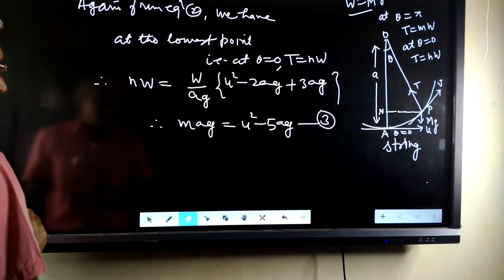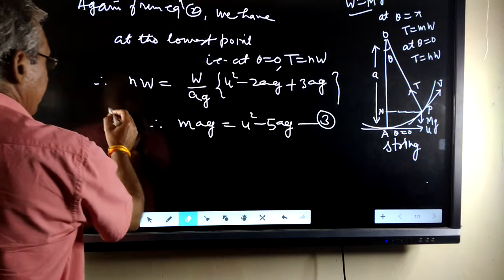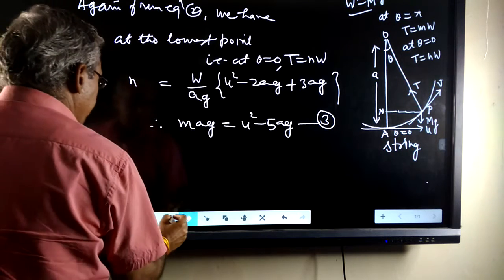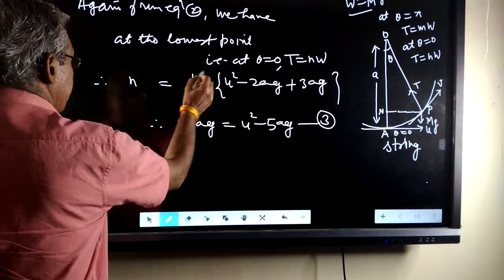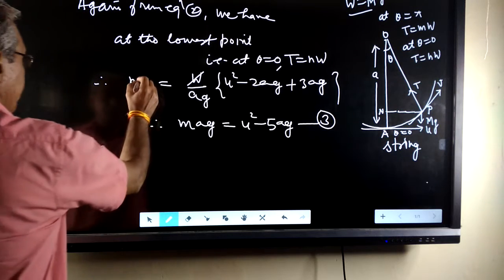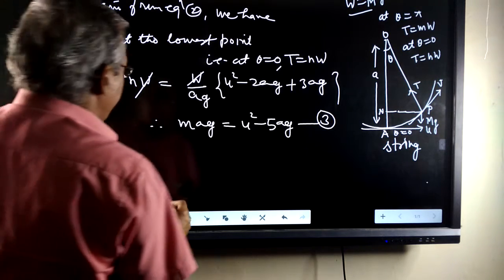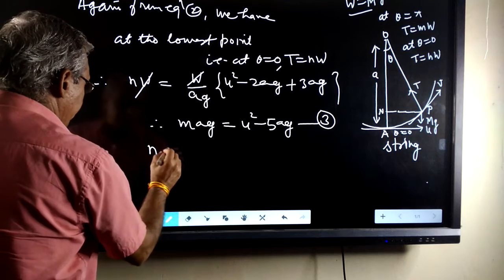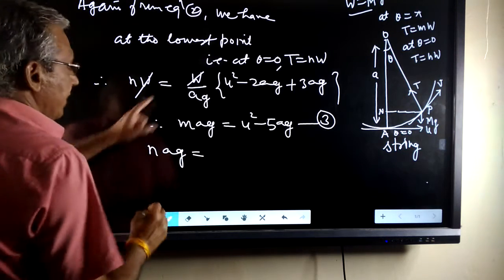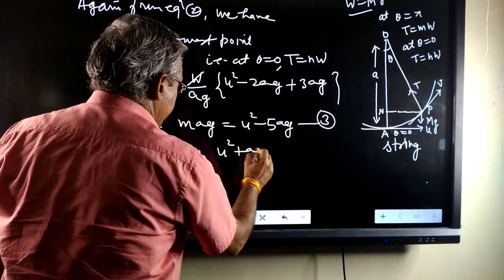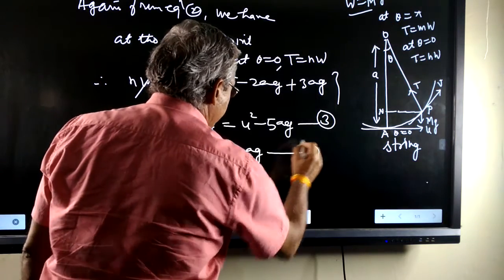Therefore, this equation can be written as, w is cancelled out. This equation becomes nag equals to u square plus ag.